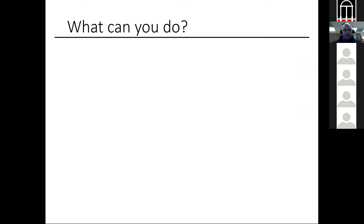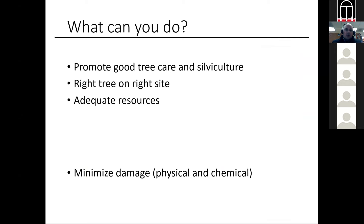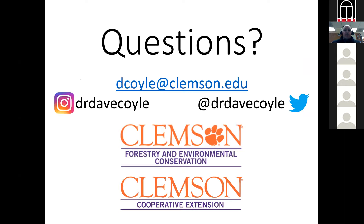Overall, what can we do? Promote good tree care and silviculture — put the right tree on the right site and give it adequate resources. Minimize damage, both physical and chemical, and follow standard ISA practices. Almost all of these pests, with the exception of the non-native ones, are secondary — they come to a tree that's already stressed or damaged. If you can avoid stress and avoid damage, you will more than likely avoid much of the problems. With that, thank you for your time, and I'd be happy to take your questions.